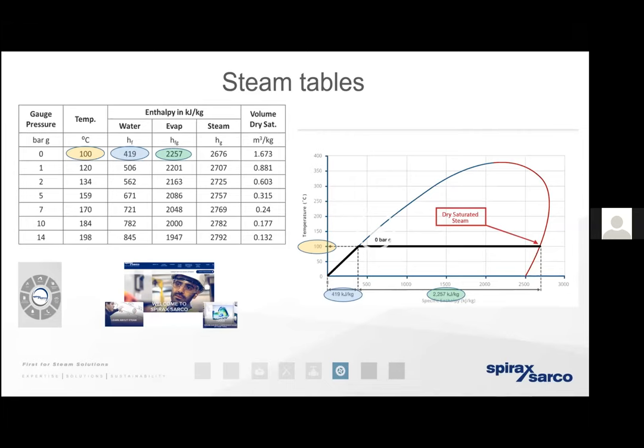What's left behind in the liquid condensate, which is the byproduct of heat exchange, is the enthalpy of water shown in the first column. For example, if we were condensing steam at atmospheric conditions — zero bar gauge, 100 degrees — the condensate would exist as a liquid at 100 degrees with 419 kilojoules of energy contained within it.